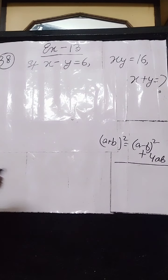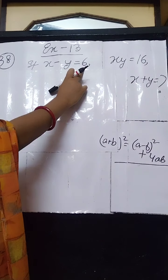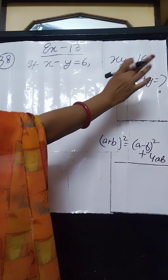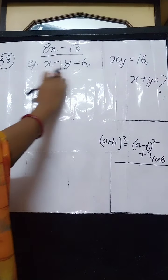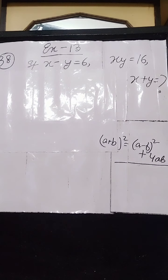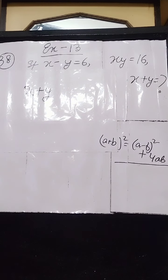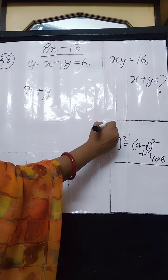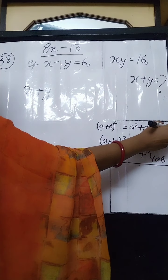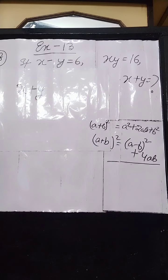In sum number 38 it is given that x minus y equals 6 and x times y equals 16. Find the value of x plus y. So the value of x minus y and the value of xy are given, and you are asked to find x plus y. The formula for (A+B)² can be written as A² + 2AB + B².